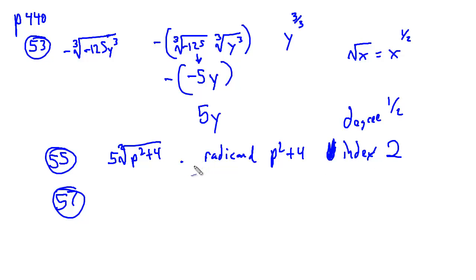So for problem number 57, the problem throws a lot of subterfuge in there to see if you can get thrown off. This is x squared y cubed times the fifth root of x over y plus 4. Therefore, your radicand is going to be x over y plus 4, and your index is 5.